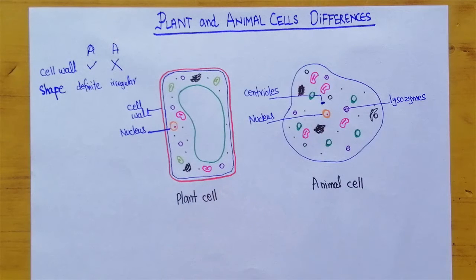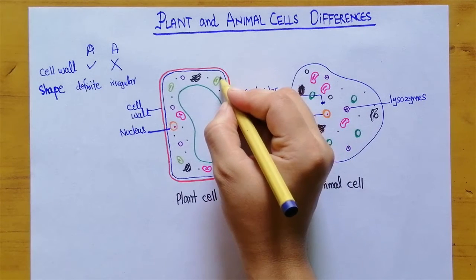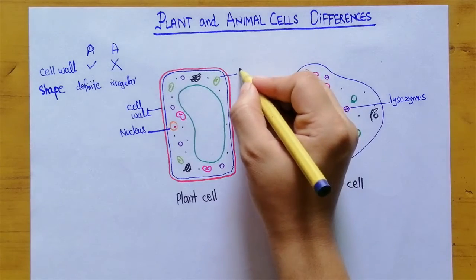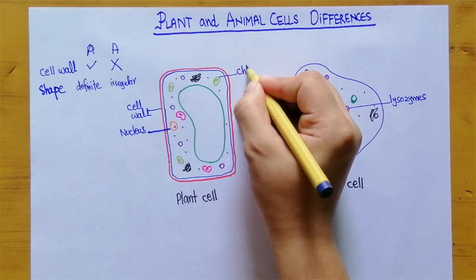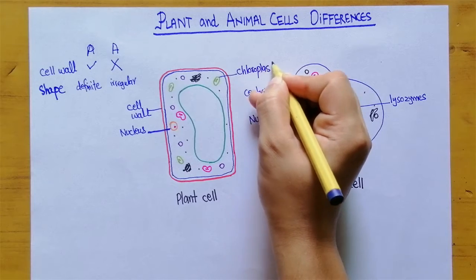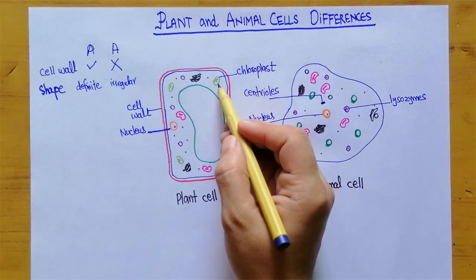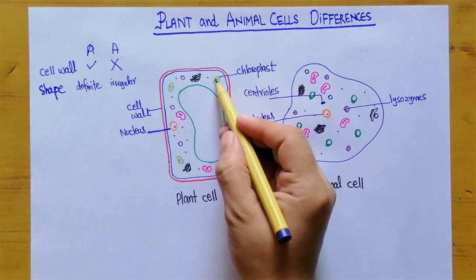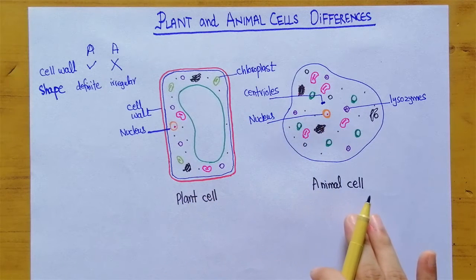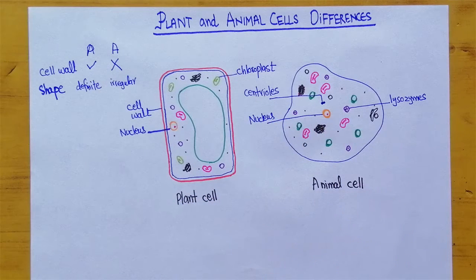In plant cells, we have this green color cell organelle which is known as chloroplast. The chloroplast is green in color and present only in plant cells, while in animal cells it is absent.